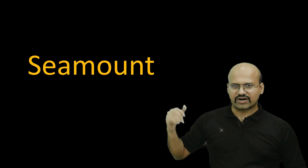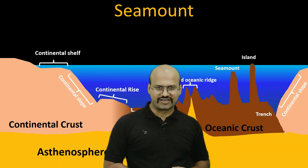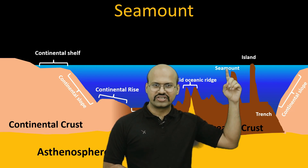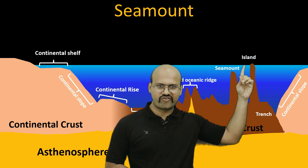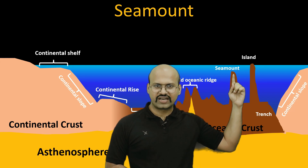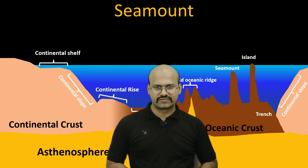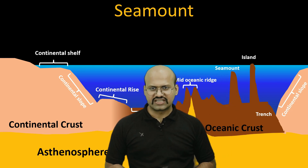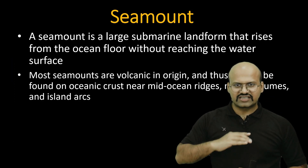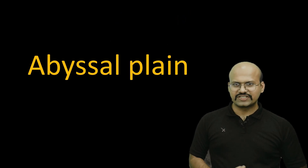Seamounts are structures that rise from the oceanic floor but do not reach the water surface. If they reach the surface, they form islands. These mountain-like structures are generally volcanic in origin — volcanic mountains get eroded and submerge below the water surface, and then we call them seamounts.